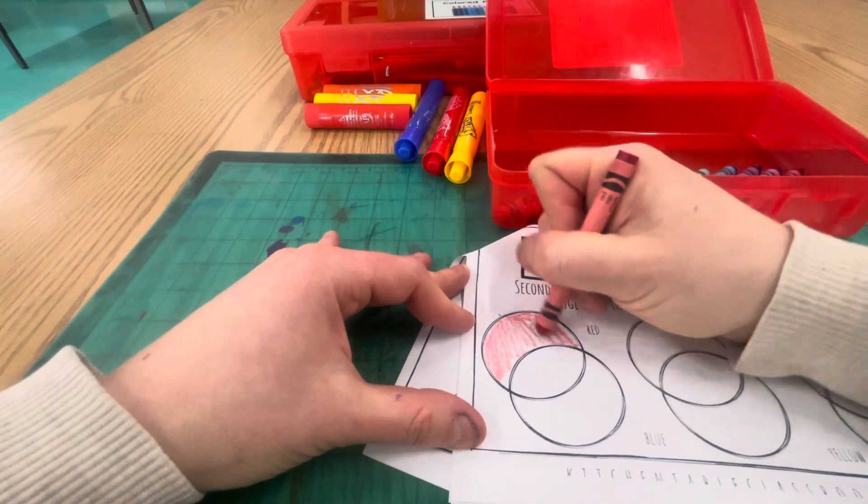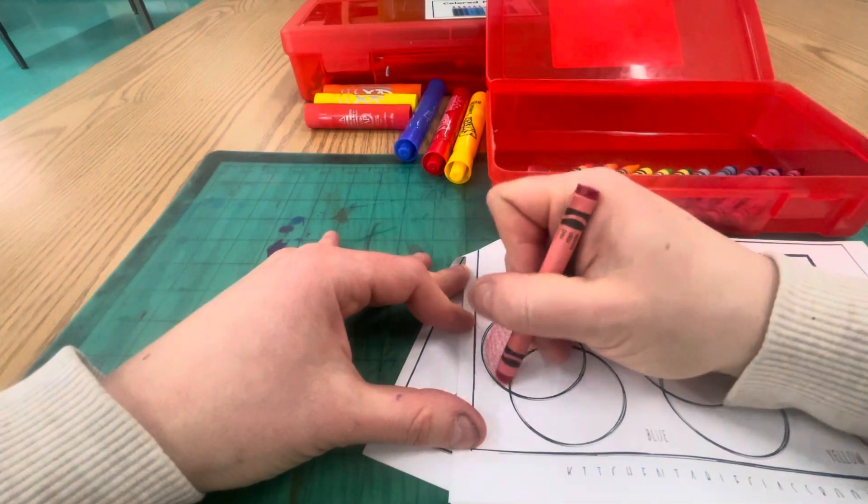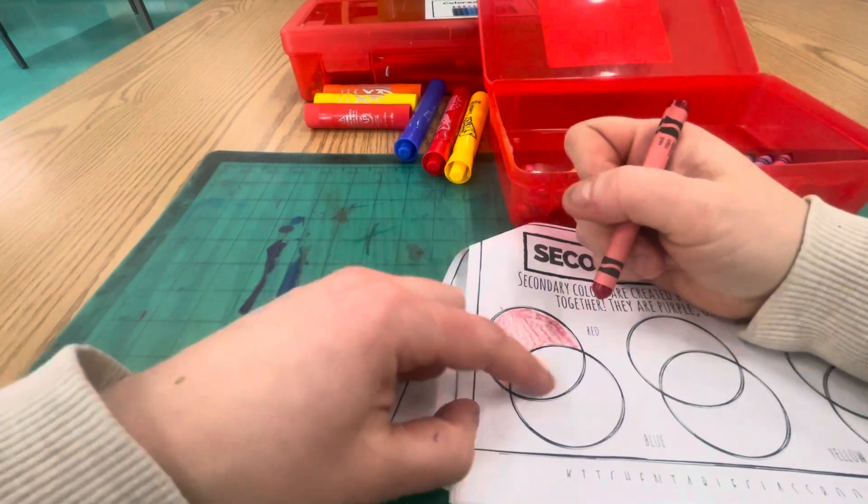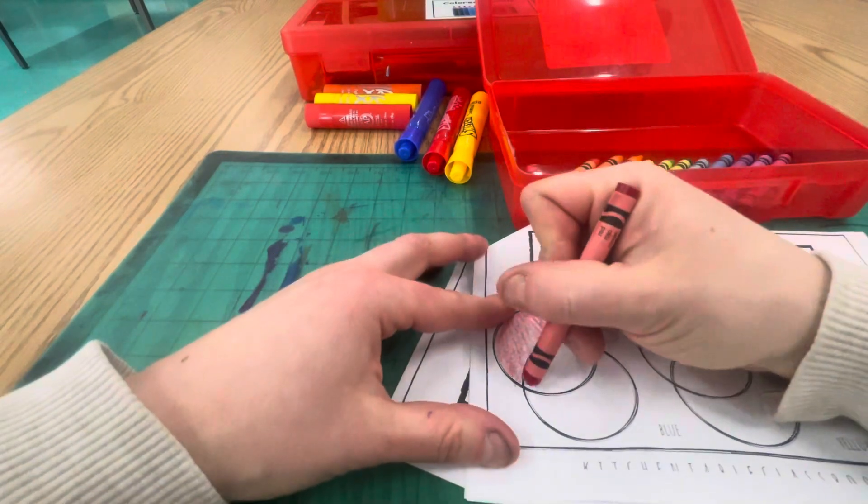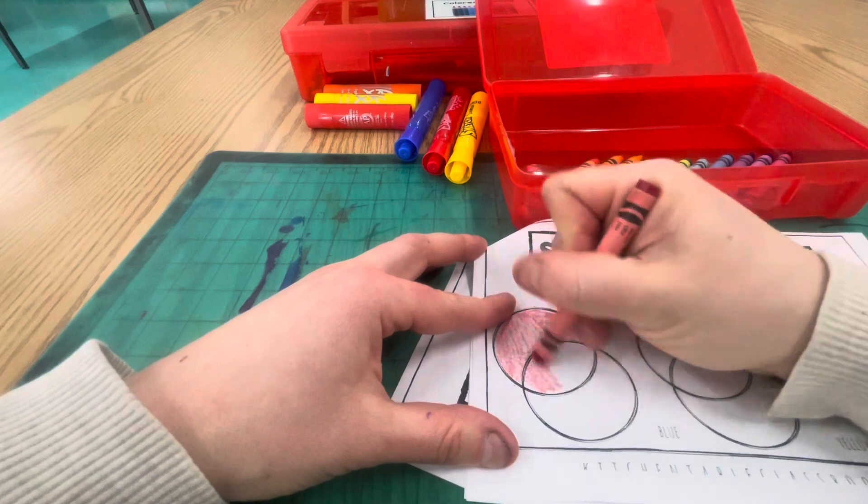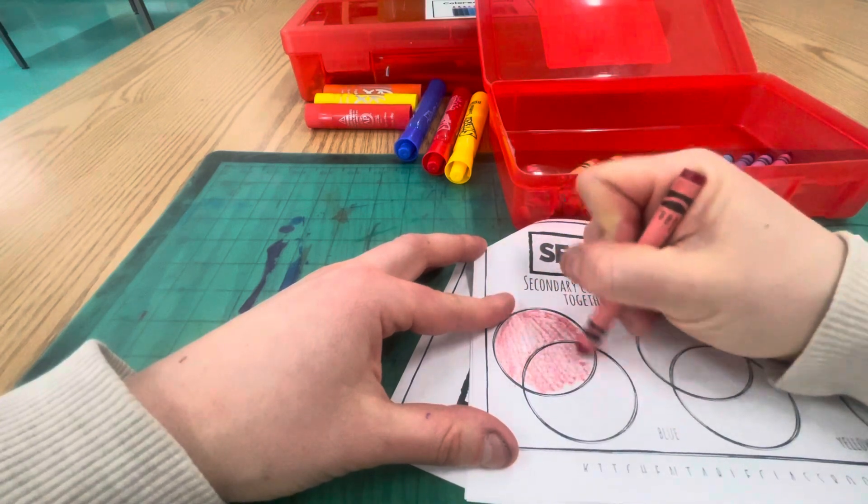Coloring that in, and then you are going to be mixing it in this space right here with the blue. So I'm still going to color this part red, but I know I'm going to be overlapping it with the blue.